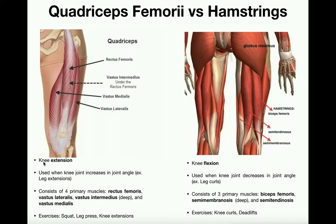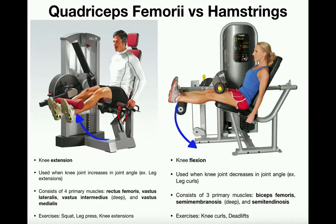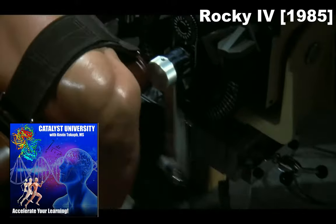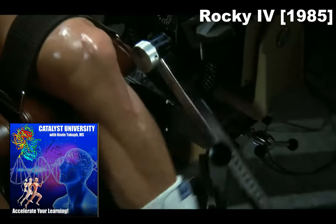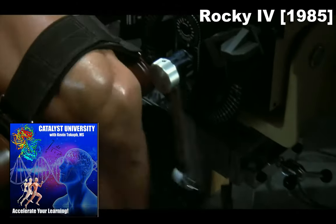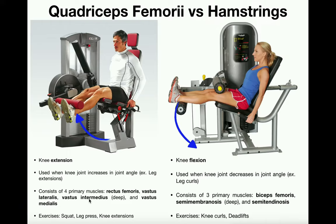The quadriceps femoris are going to be involved in knee extension — that's like this exercise right here. If you do anything that increases the angle of your knee joint, so if this man started with his legs down and forcibly moved his legs up to where his knee joint angle approaches 180 degrees, that process is knee extension, facilitated by all four quadriceps muscles.